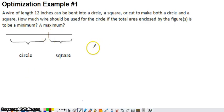You'll find variations of this in most calculus textbooks. In this one what's described is that we have this piece of wire that's 12 inches long. We're going to bend the wire to make a circle, to make a square, or we're going to cut the wire and make both a circle and a square.